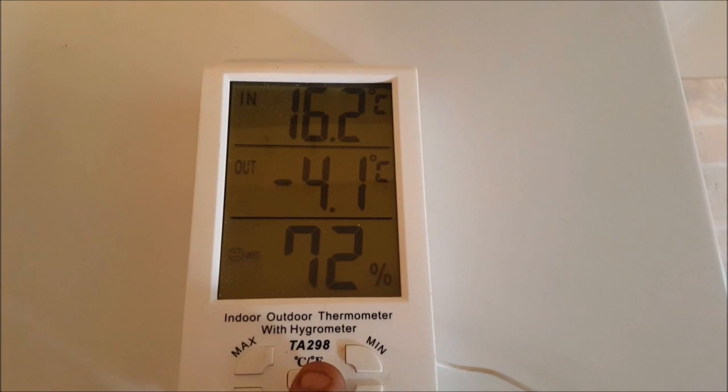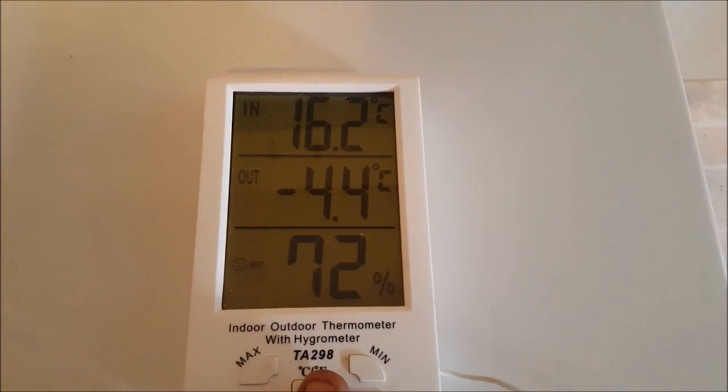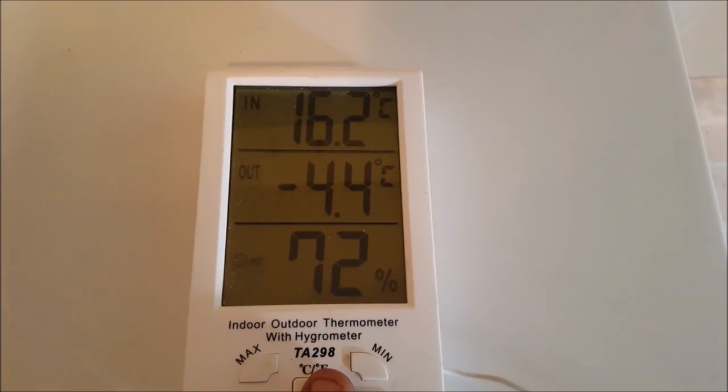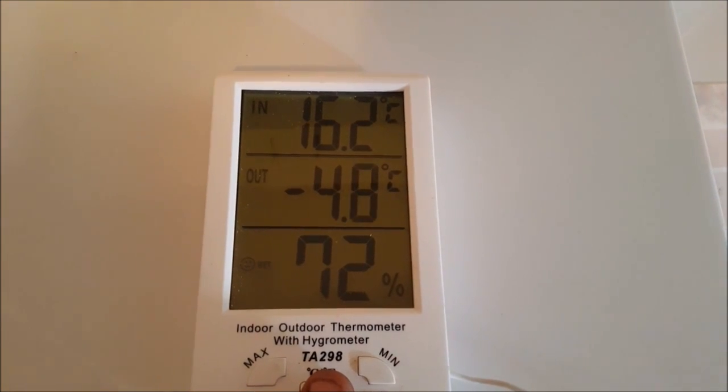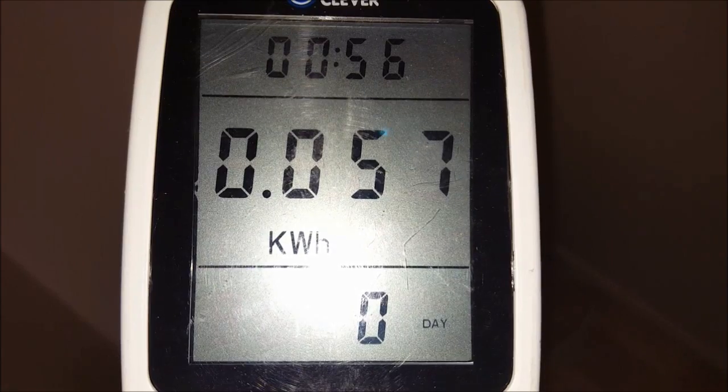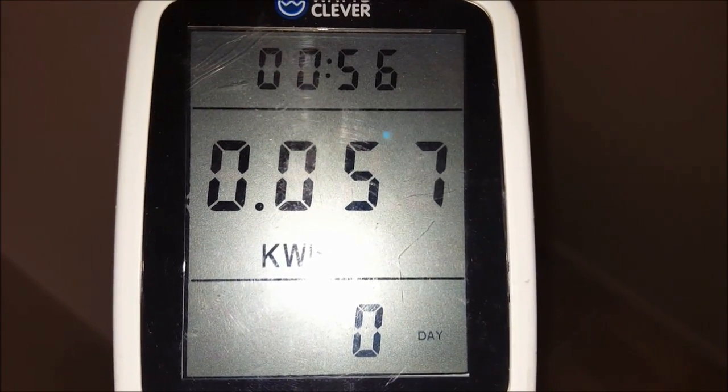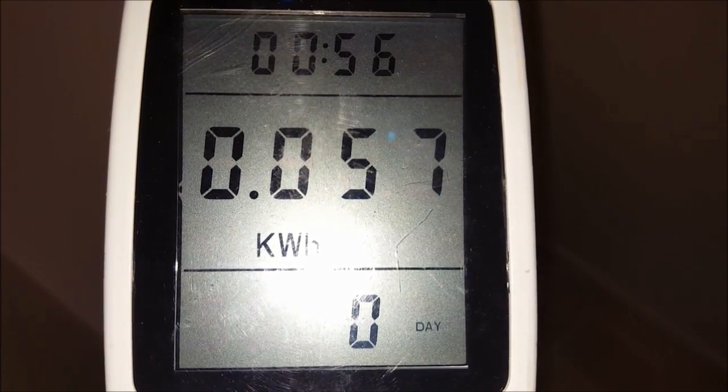There you go, got down to minus 4.1 degrees Celsius. Still dropping—the compressor's turned off. But minus 4.1 is where the compressor stopped. Been going for close to 8 hours now, and it's used 0.057 kilowatt hours. That's 57 watt hours, 8 hours of run time.